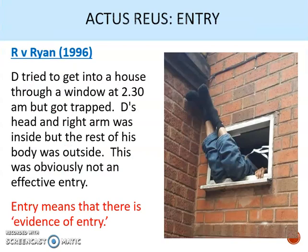The first actus reus requirement for burglary is that we must have entry. You might think this is obvious — whether someone has entered a building or not — but over the years, the word 'entry' has posed some problems for the courts. In the past, it was held that to amount to entry, the defendant had to make a substantial and effective entry. But this posed problems in situations like the case of Ryan.